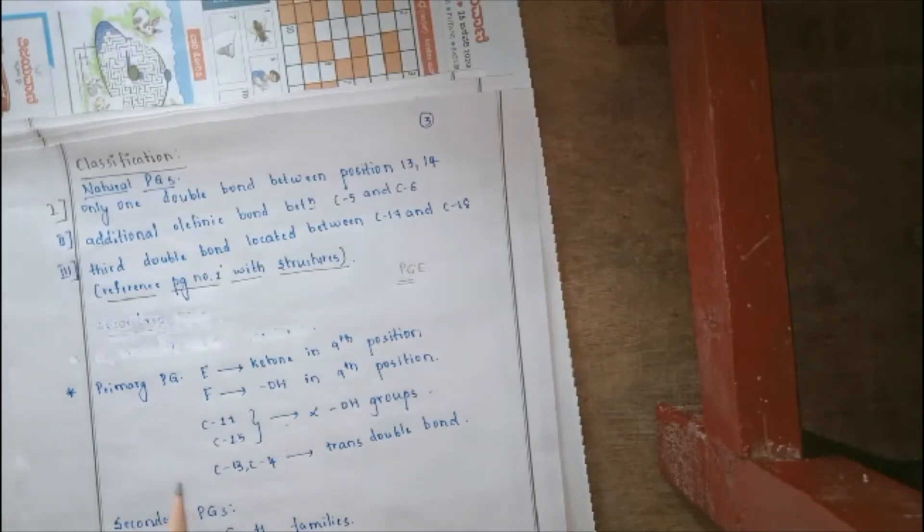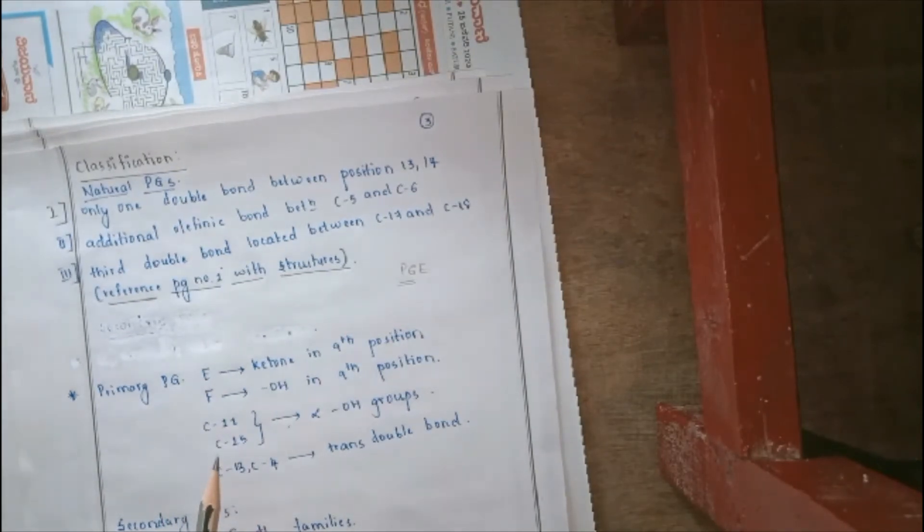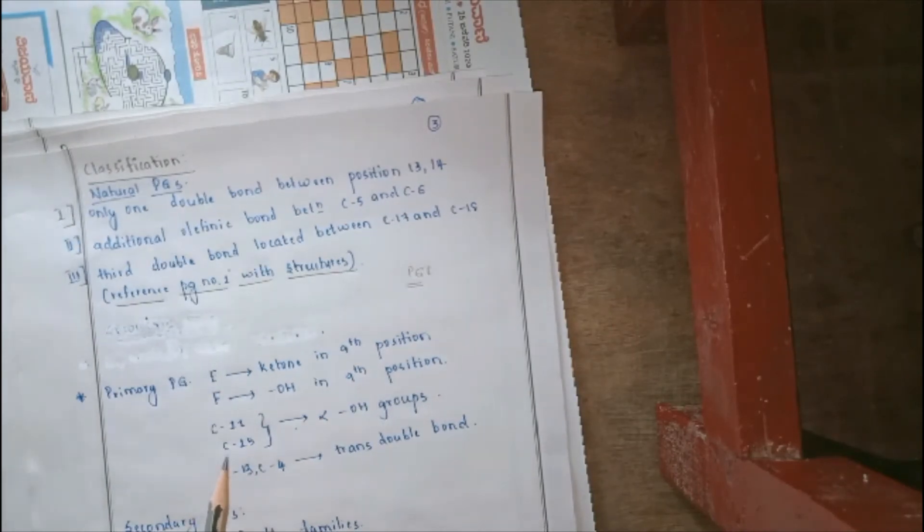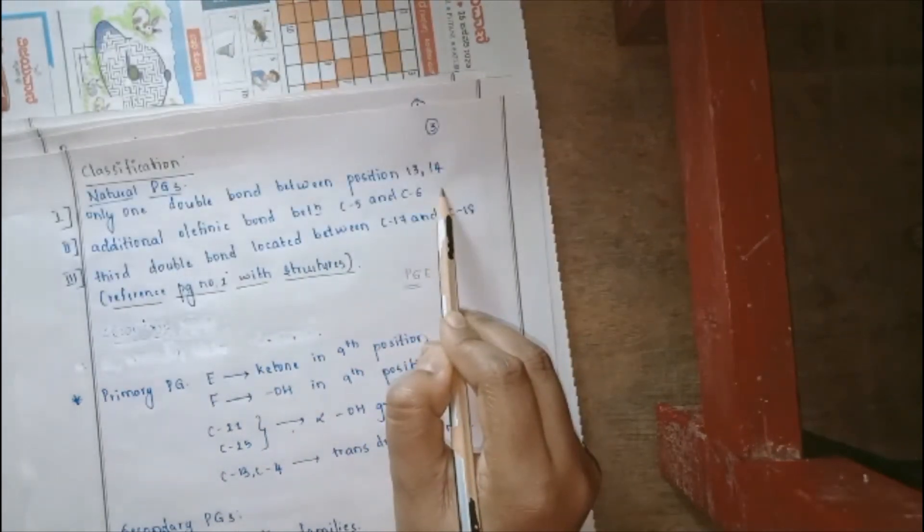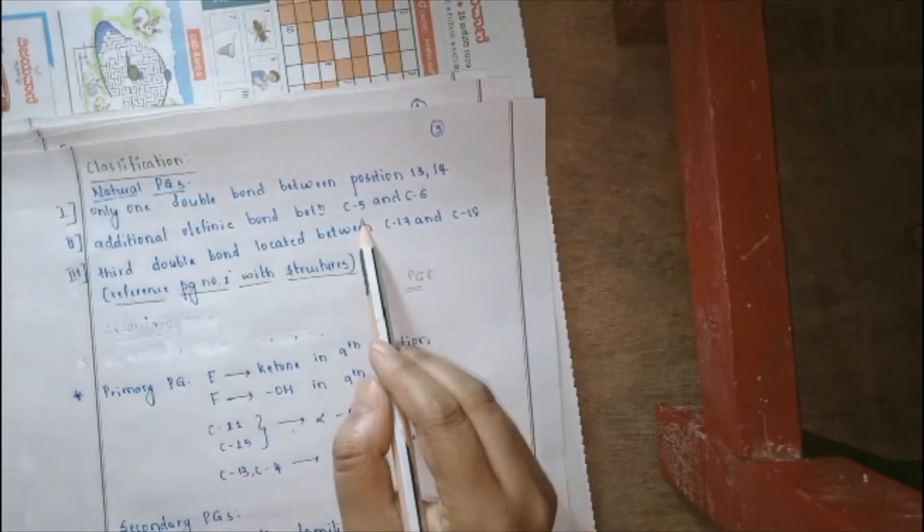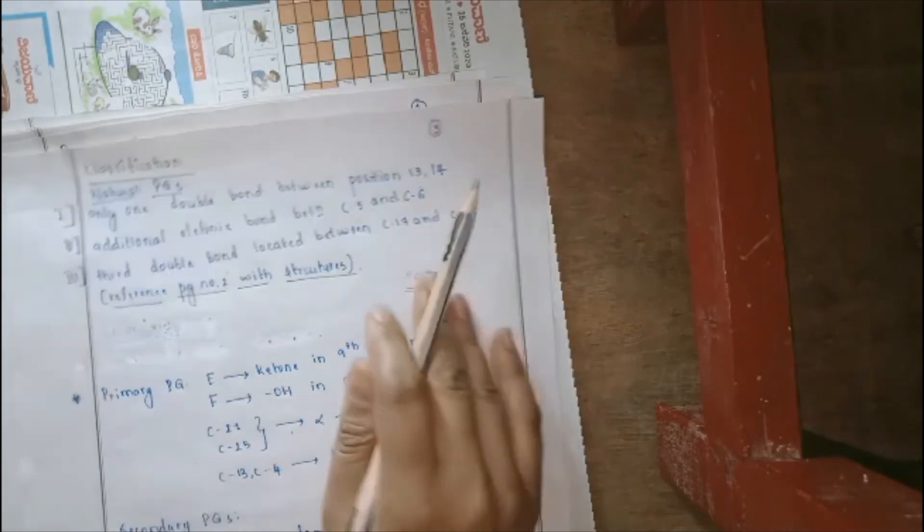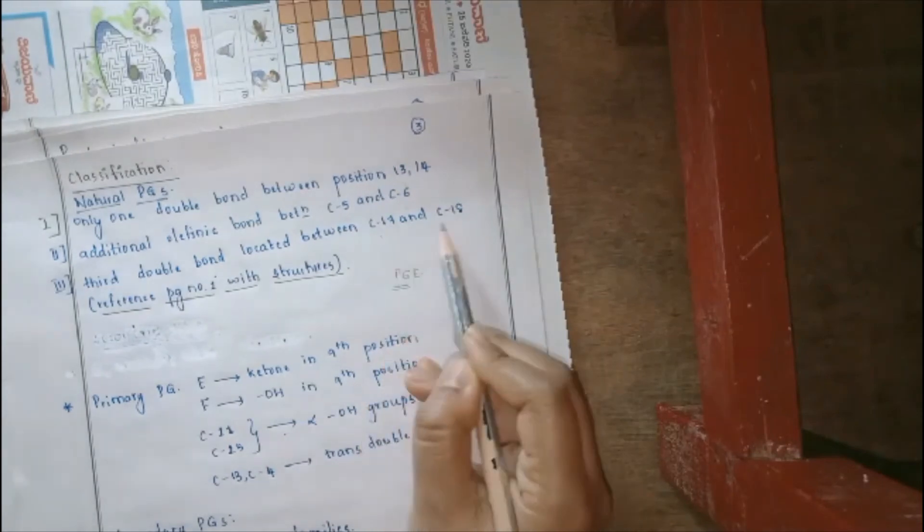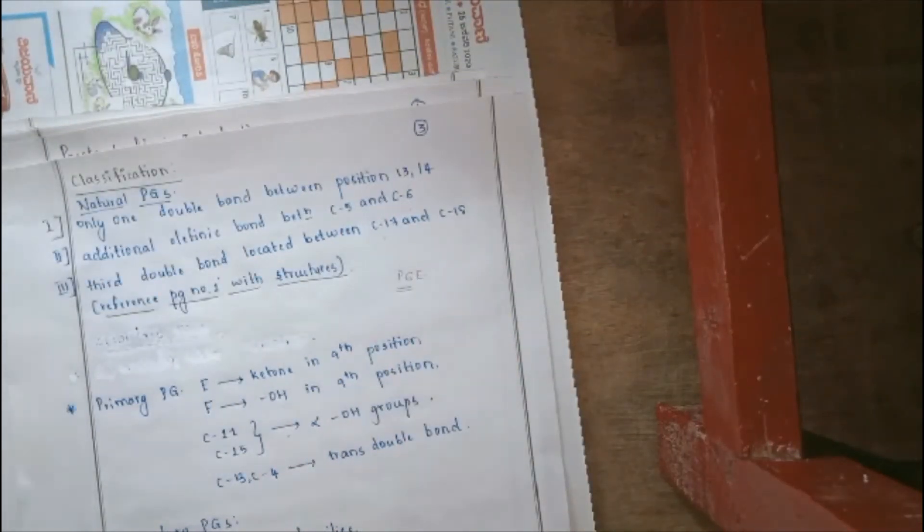Coming to the classifications. Under classification, prostaglandins can be seen that, there is a presence of natural prostaglandins. That means, presence of only one double bond between position number 13 and 14. There can also be certain additional olefinic bonds between carbon number 5 and carbon number 6. There can be a third double bond which is located between carbon number 17 and 18. So, these naturally occurring prostaglandins, they not only resemble prostanoic acid. Apart from that, there would be a presence of the extra double bonds.